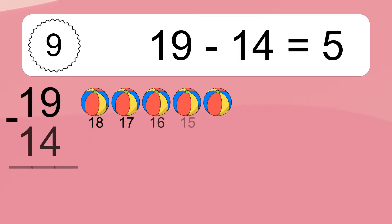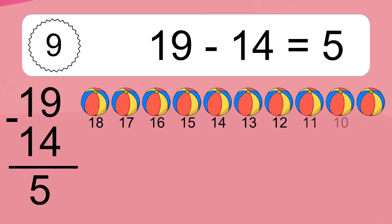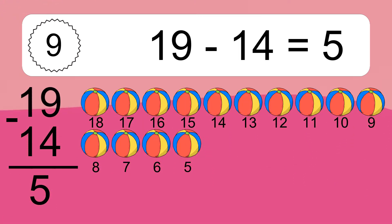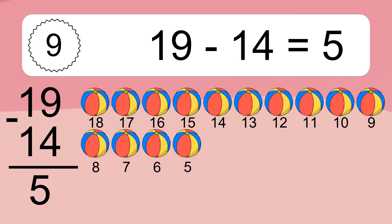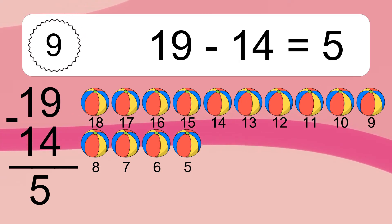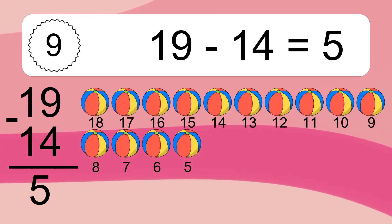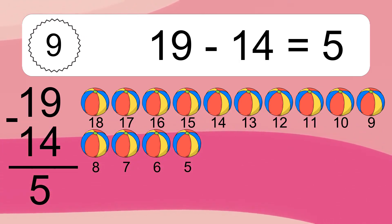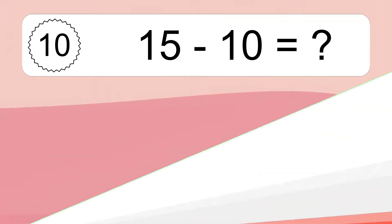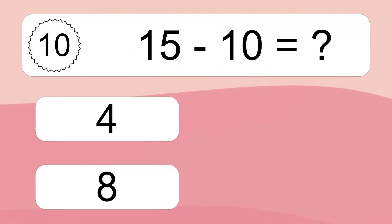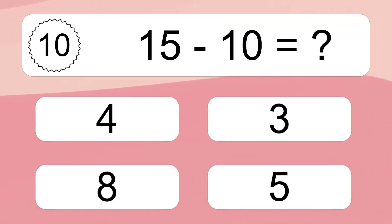19 minus 14 equals what? 19 minus 14 equals 5. Let's count it: 18, 17, 16, 15, 14, 13, 12, 11, 10, 9, 8, 7, 6, 5.